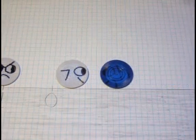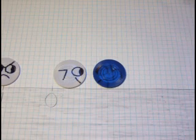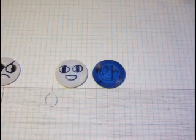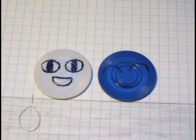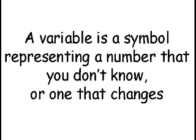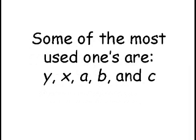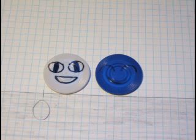Hi! Sorry I'm late, Seven. I was being used in a fifth-grade equation. This is my friend H. She is a variable! A variable is basically a symbol representing a number you don't know, or one that changes. They are very useful in complicated equations. Some of the most used ones are Y, X, A, B, and C. In Mathland, they can change into any number.